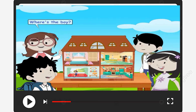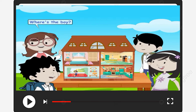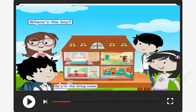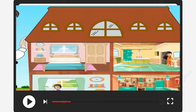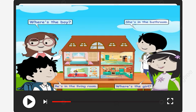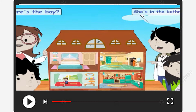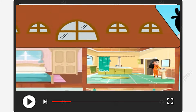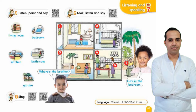Where's the boy? He's in the living room. Where's the girl? She's in the bathroom. تعالوا نشوف الكلمات — أول كلمة عندنا: Living room — اللي هي حجرة المعيشة.